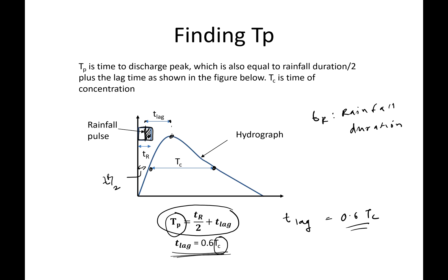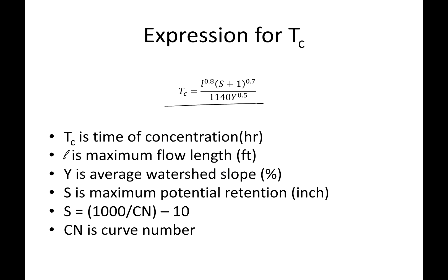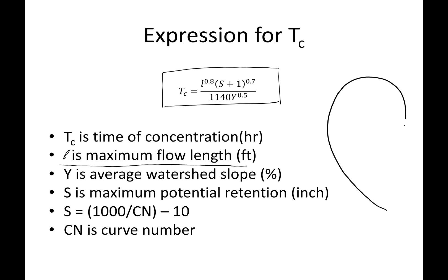To find the lag time we need the time of concentration. There are several empirical equations for tc; the preferred one shown here involves: L, the maximum flow length from the farthest point in the watershed to the outlet; Y, the average watershed slope; and S, the maximum potential retention in inches — the same S used in the SCS curve number method.